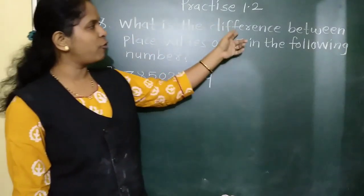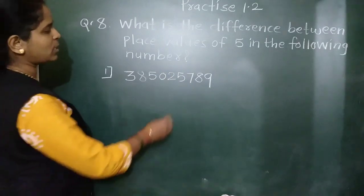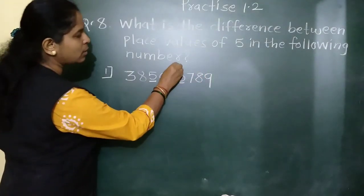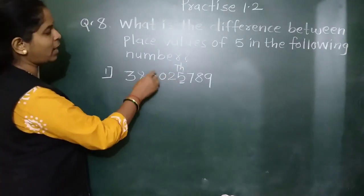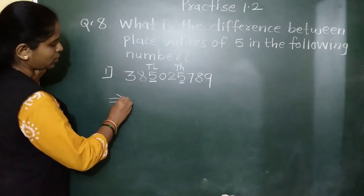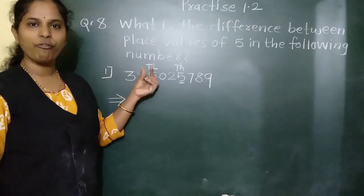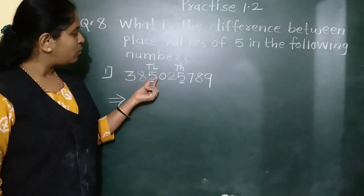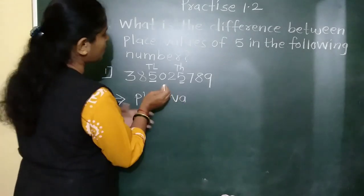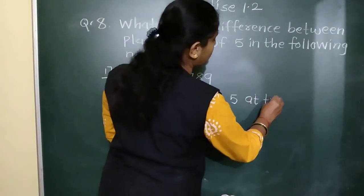What is the difference between the place values of 5 in the following number? Look at the number — at which places is 5 there? Here and here. So which places are these? Ones, tens, hundreds, thousands, ten-thousands, hundred-thousands, and ten-lakhs place. This 5 is at the ten-thousands place and the other 5 is at another place. To find the difference, we first find the place value of 5 at each particular place.